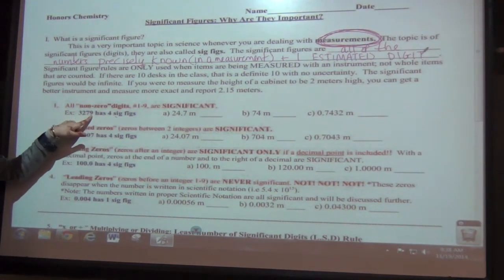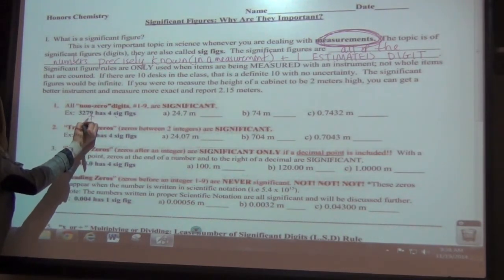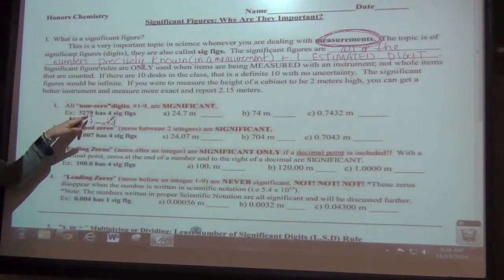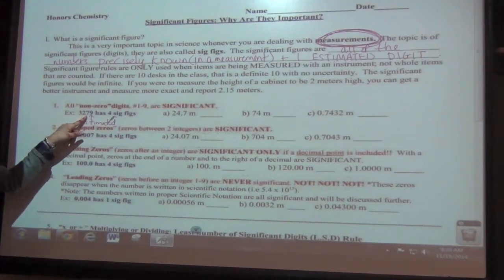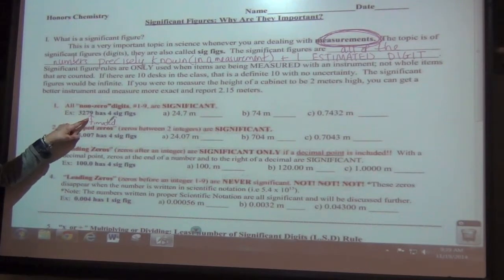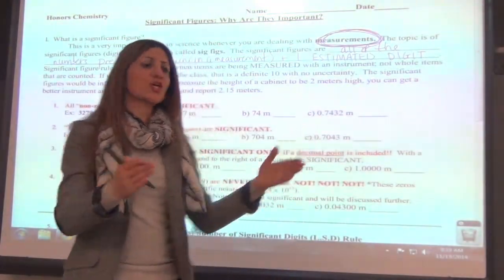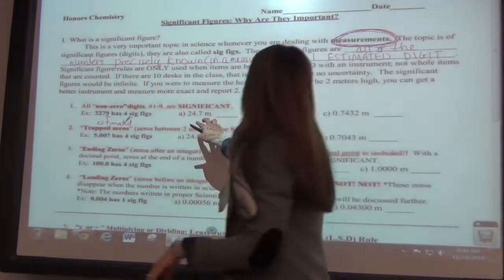Every single number there is significant. The last one listed is your estimated digit. That means it may not be exactly 3279 — it could be 3278, 77, or 76. Going up, it might be 3280, 81, or 82. We have a range of uncertainty, and the last number you list is the one you're uncertain of.